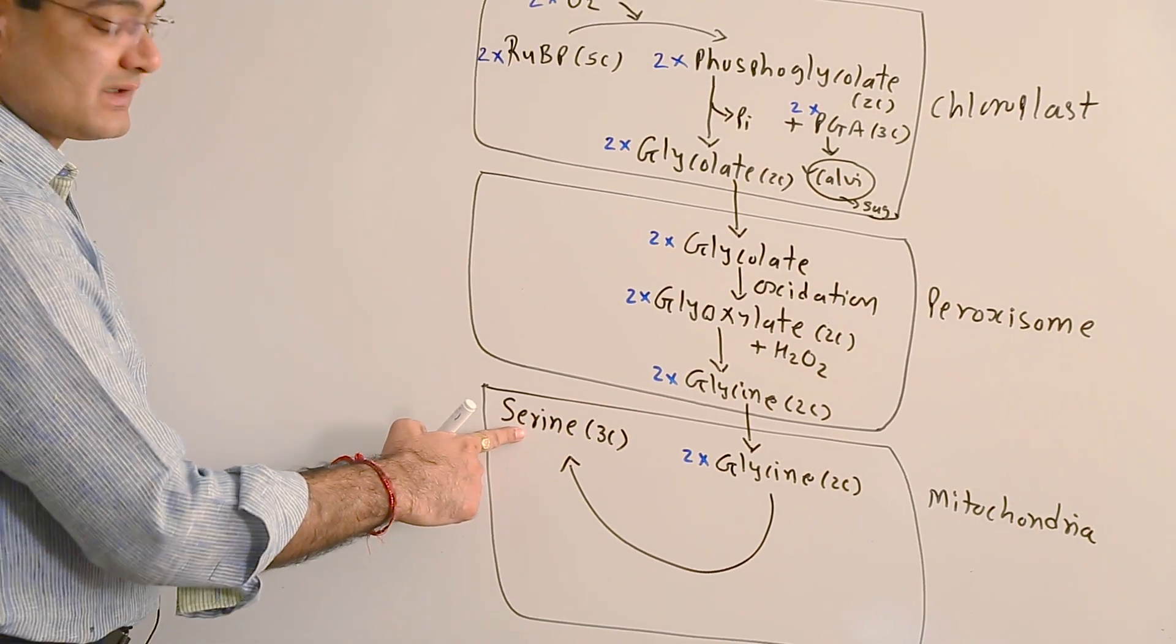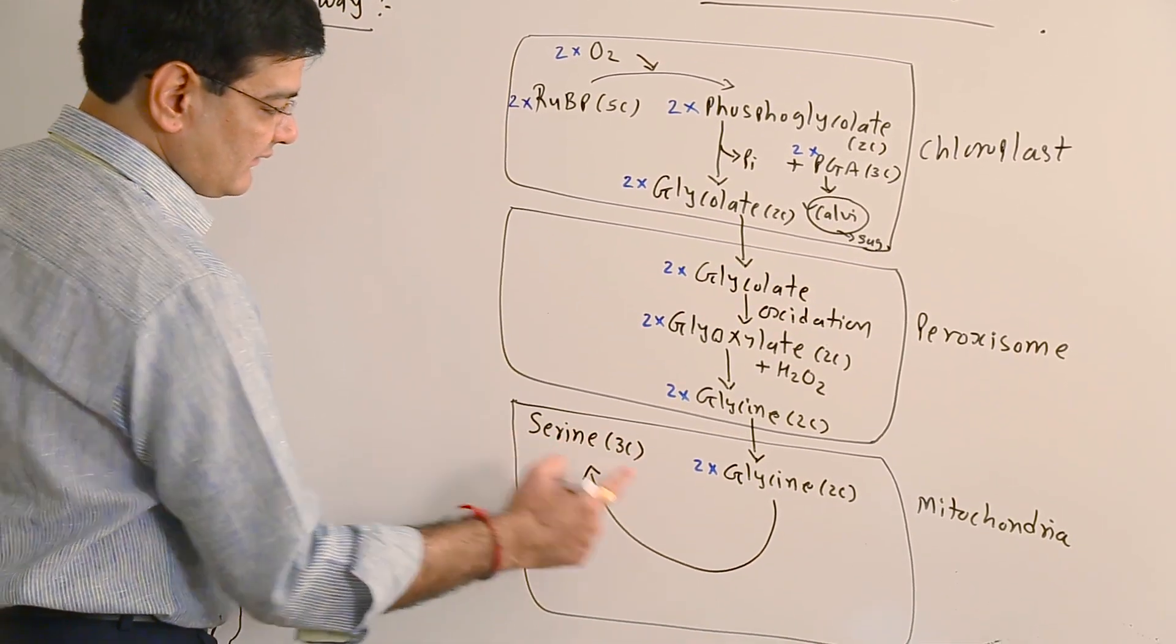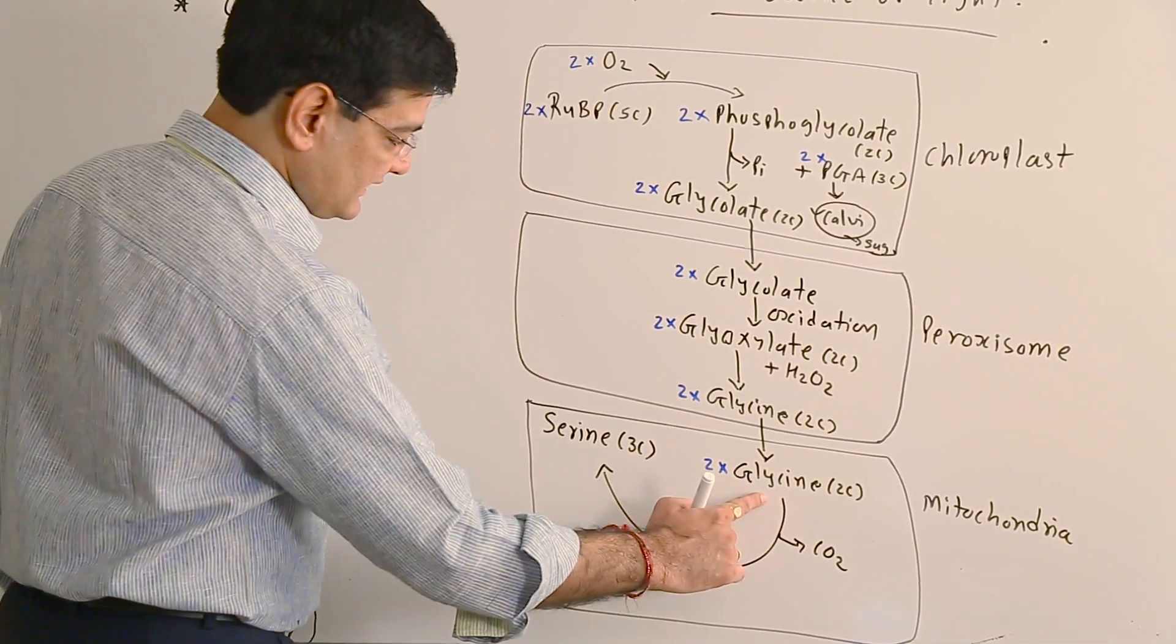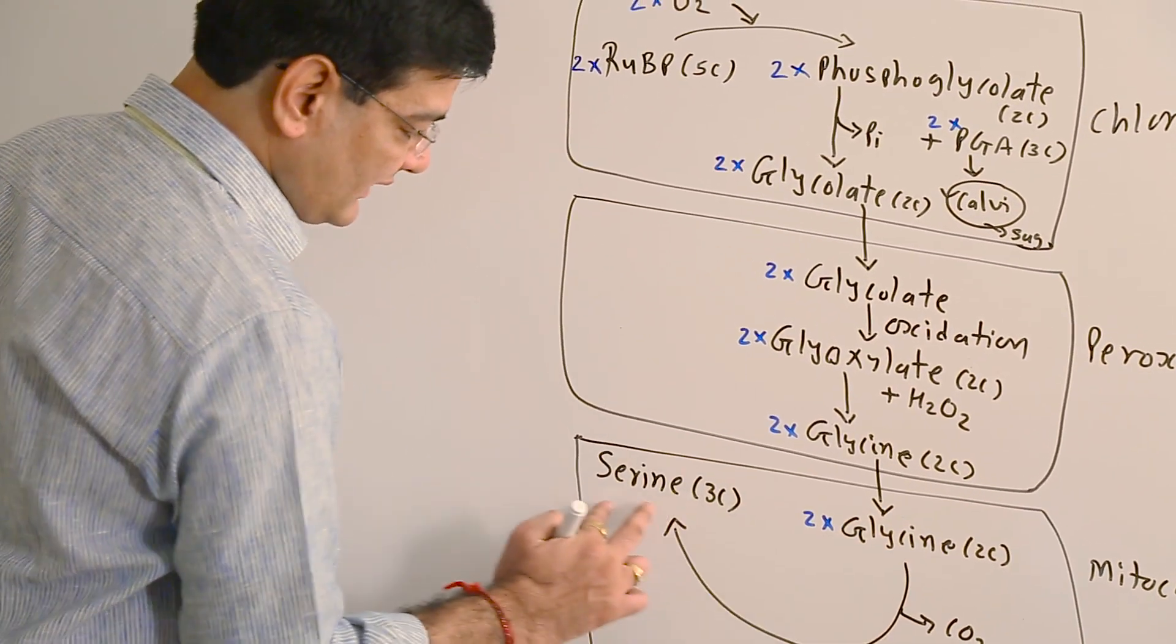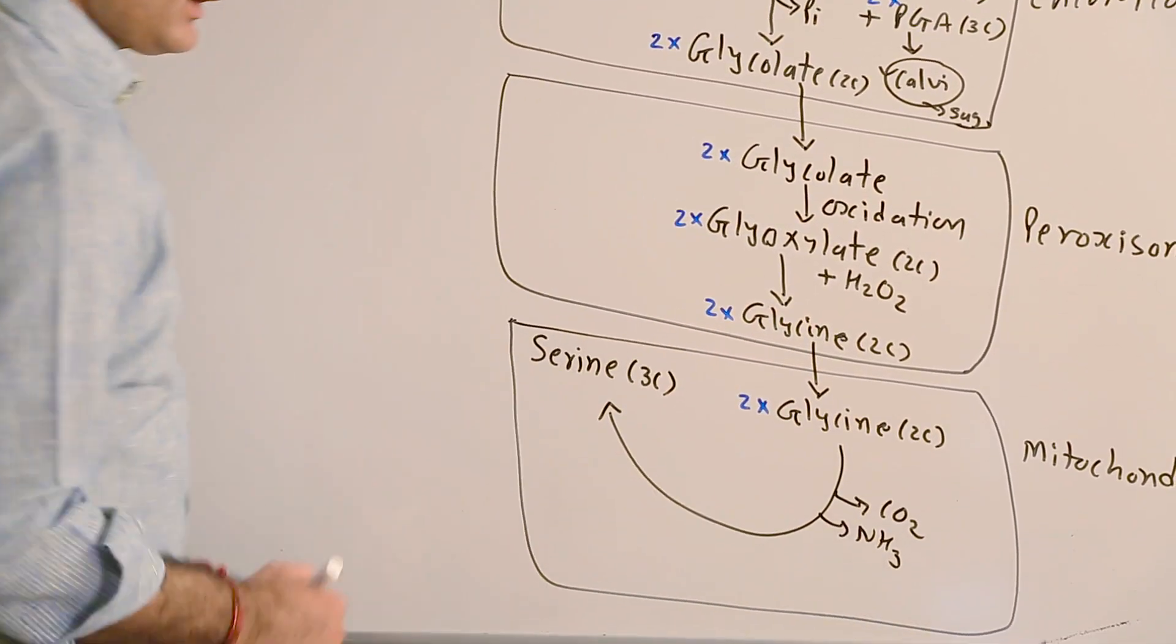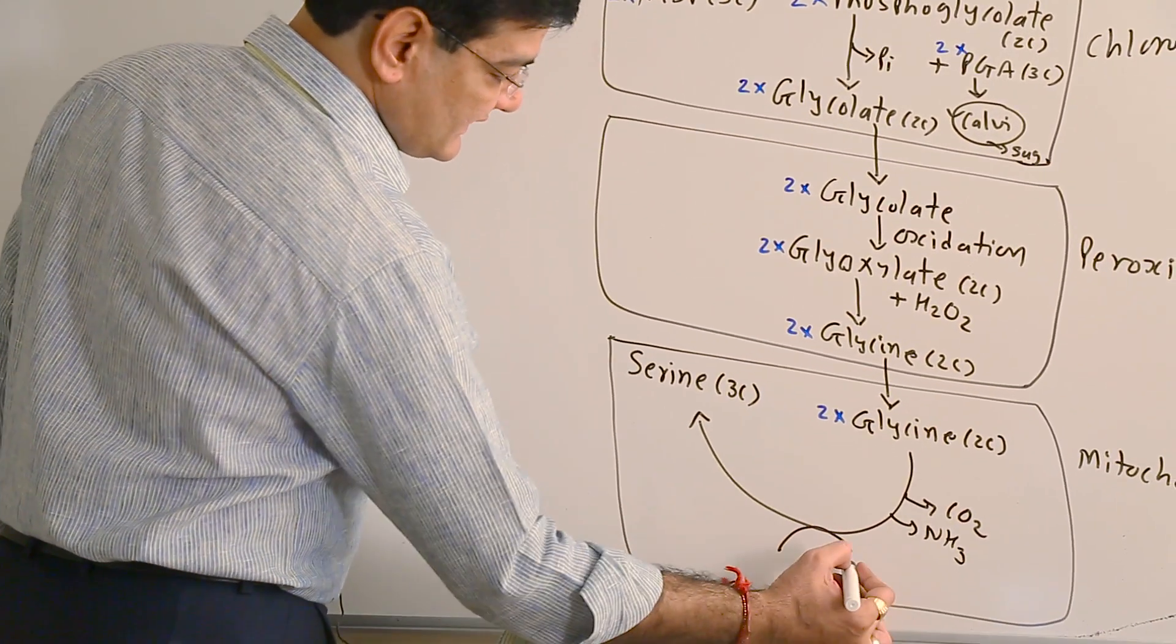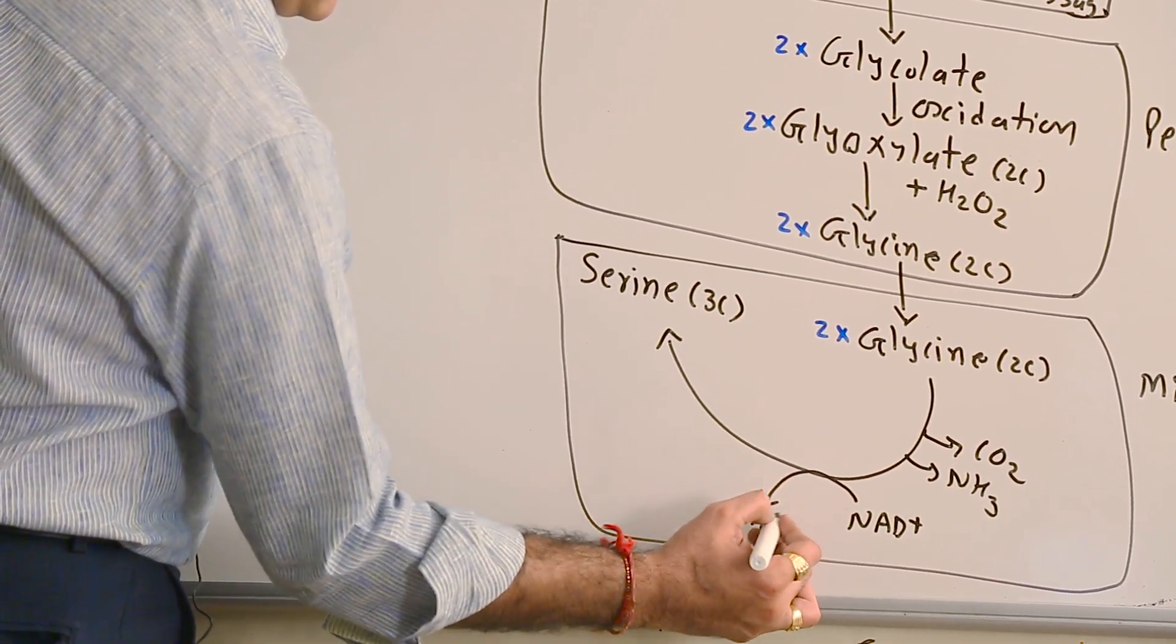Again, it is an amino acid. So from the four carbons, three-carbon containing serine forms and one carbon is lost in the form of carbon dioxide. As I told, glycine and serine are both amino acids. So from these two amino acids, one another amino acid forms, and so one NH3, ammonia, gets released in this process. Again, in this process, H+ or proton also releases, which reduces NAD+ into NADH.